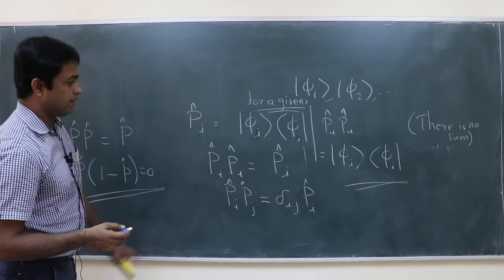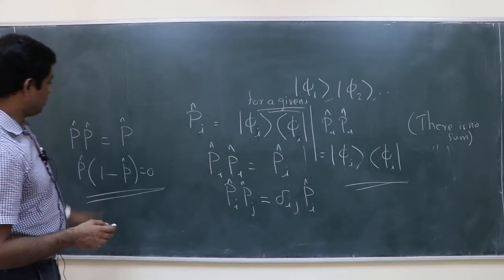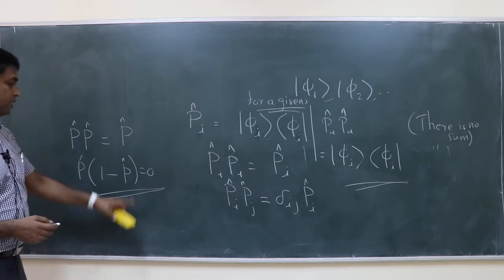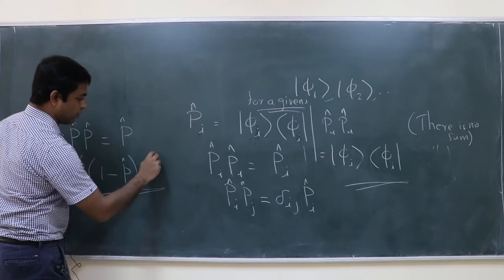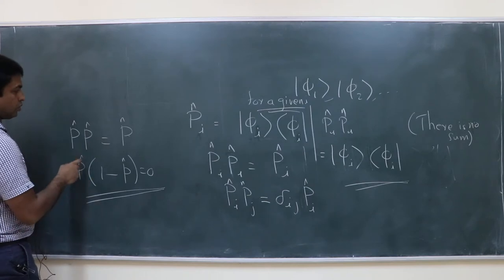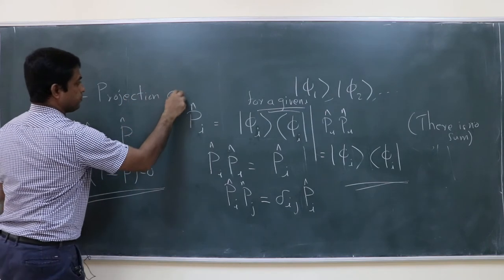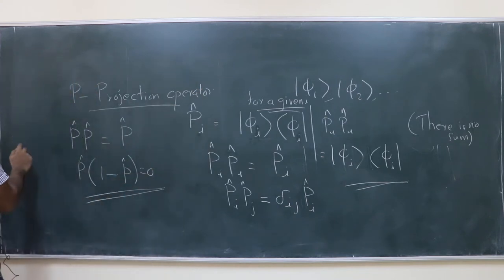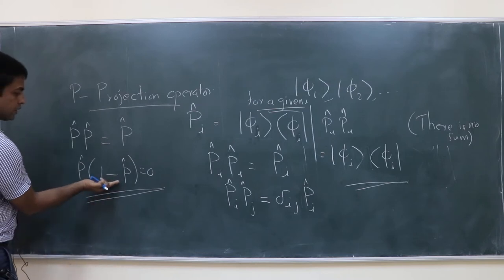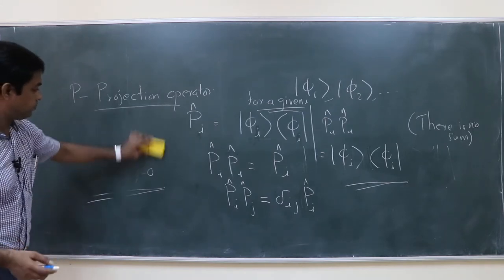A simple question: what will be the eigenvalues of the projection operator P? We have P(1 − P) = 0. Think about whether you can come up with an answer. P is a projection operator — can we understand its eigenvalues from this relation alone, without writing out the matrix form?